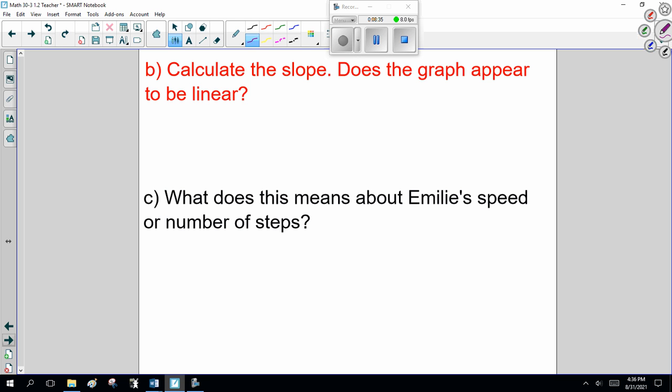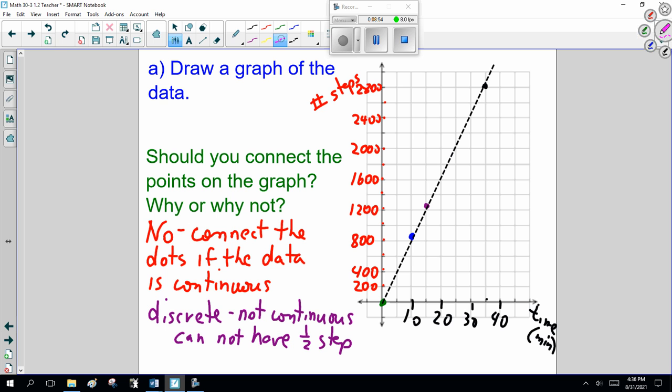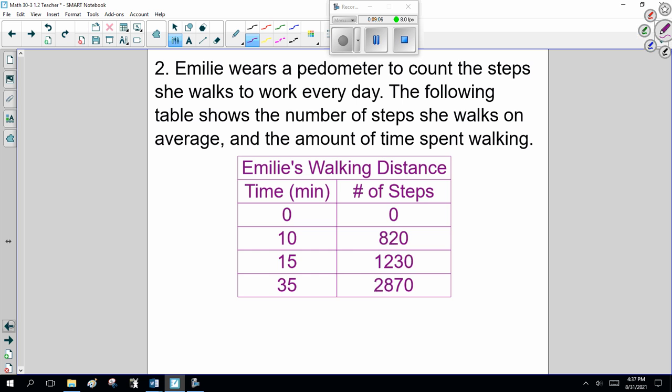So second and last question. Calculate the slope. And does the graph appear to be linear? Well yes, it does appear to be linear. Slope, rise over run. Now I can get the fancy y2 minus y1 over x2 minus x1, or I can just look at, go back to the graph I drew and go, rise and run. My run is 35, my rise is 2870.